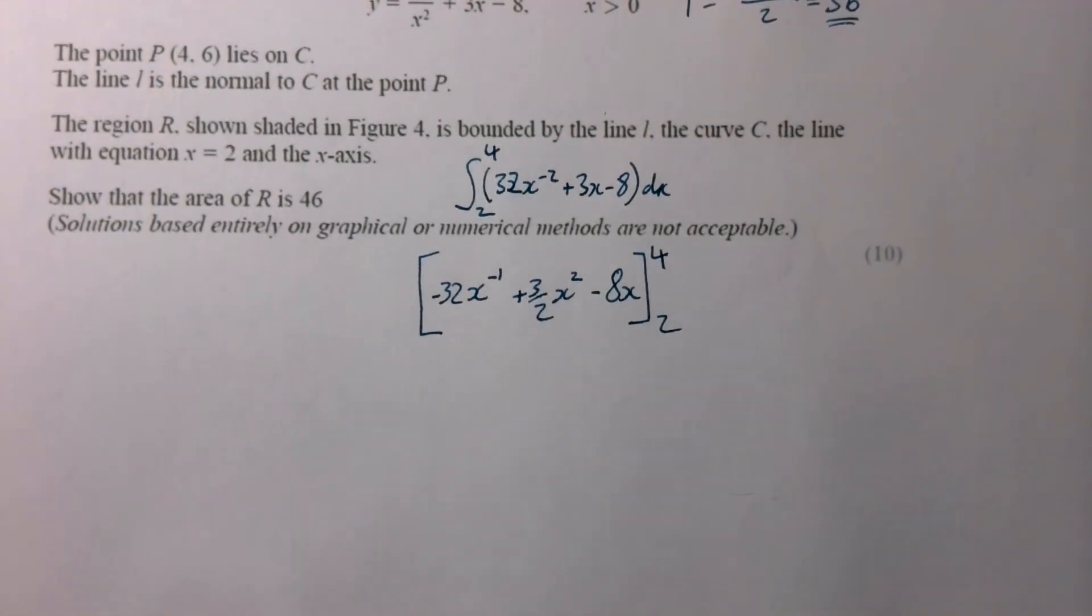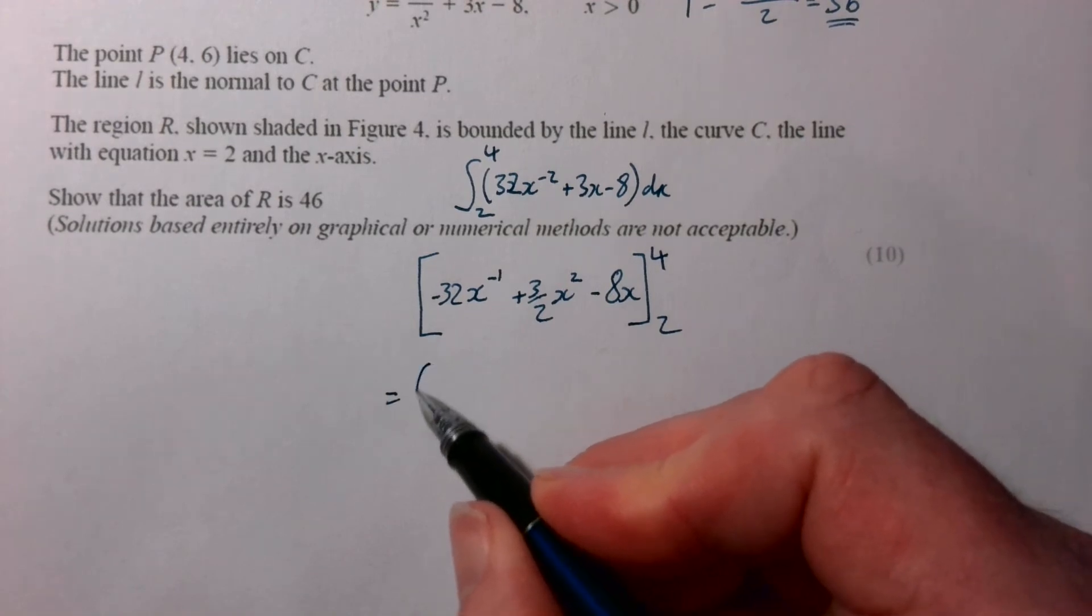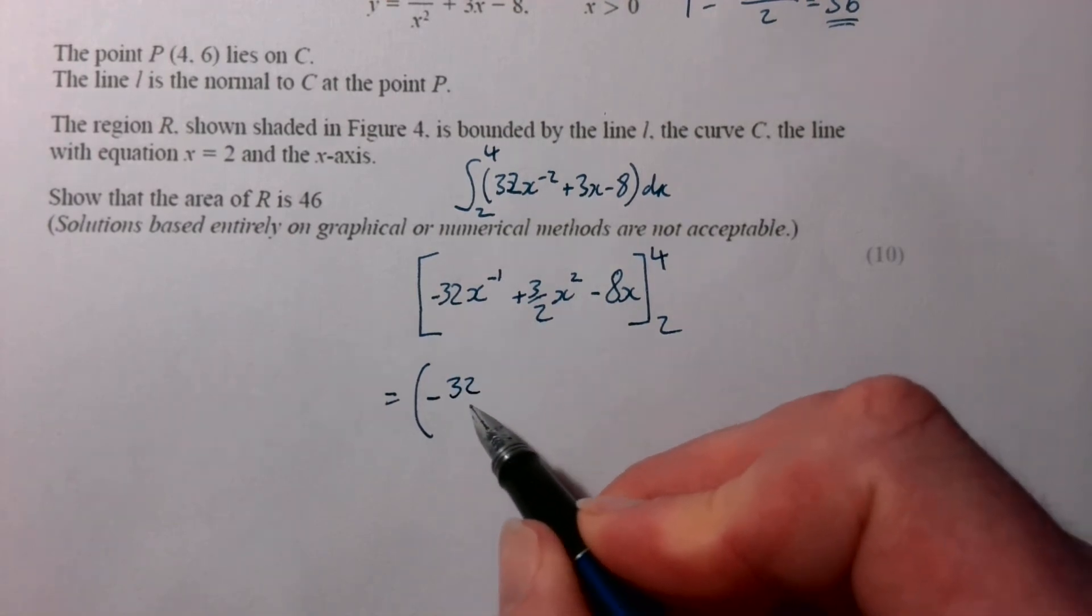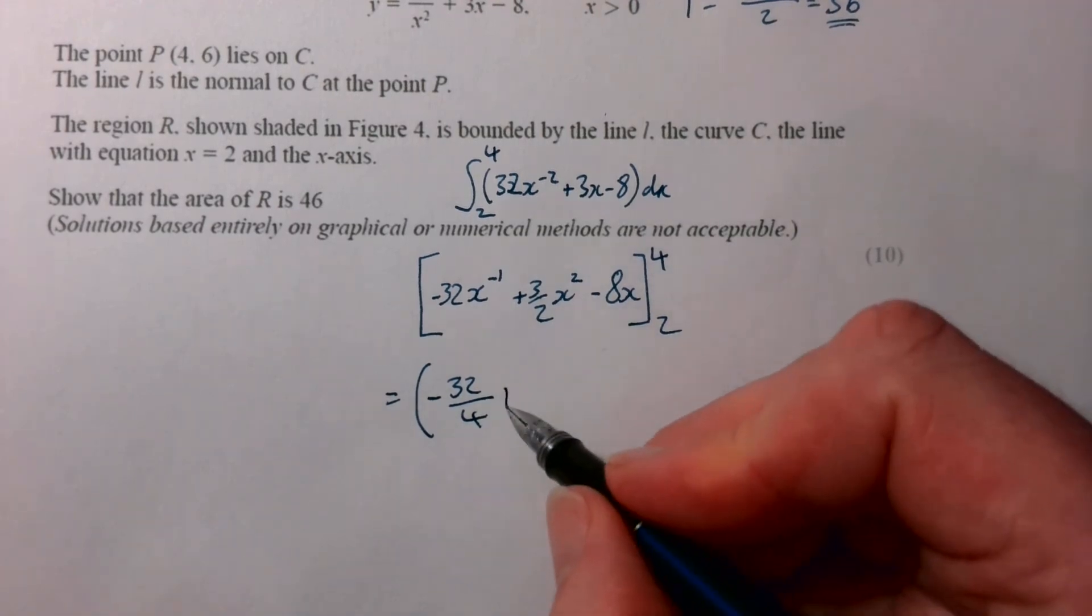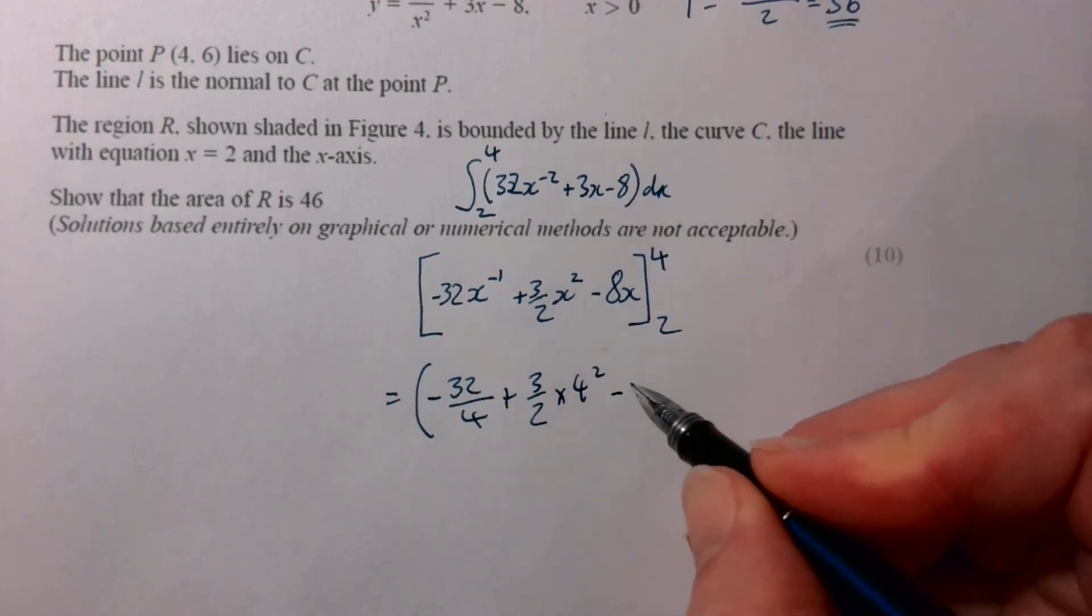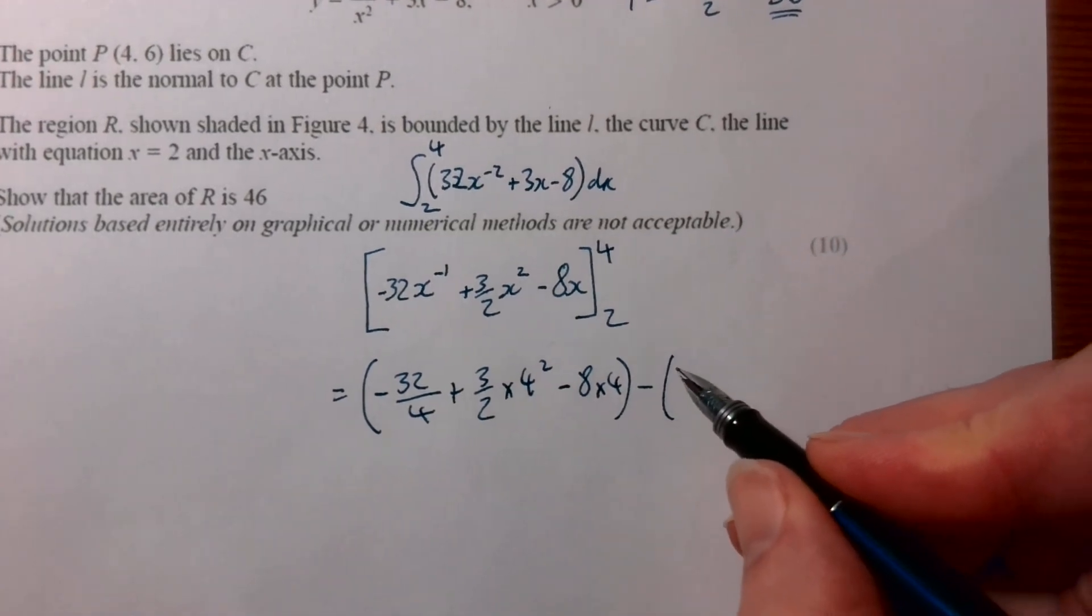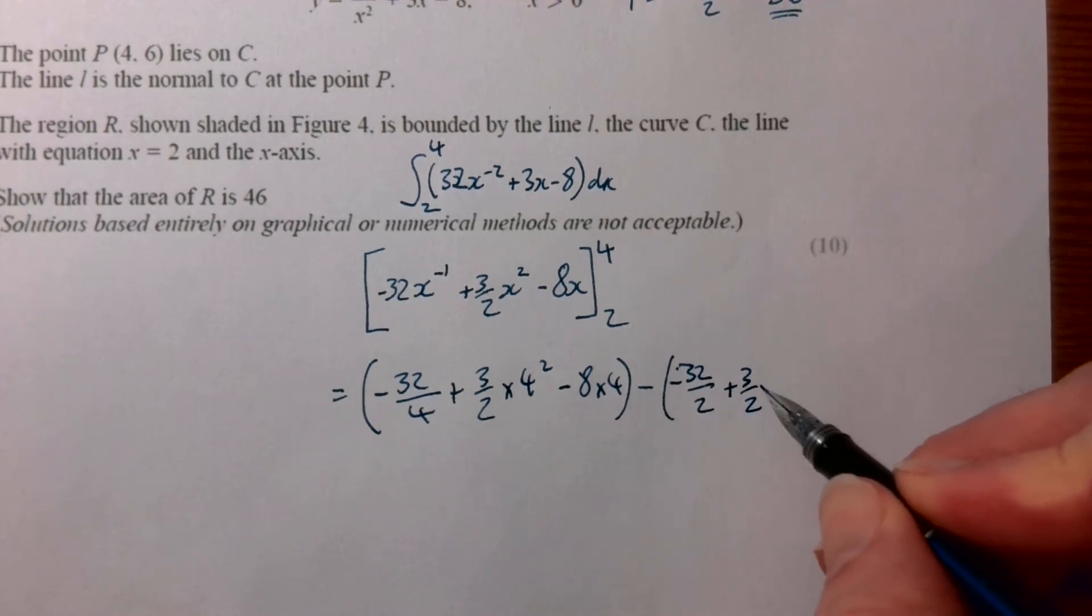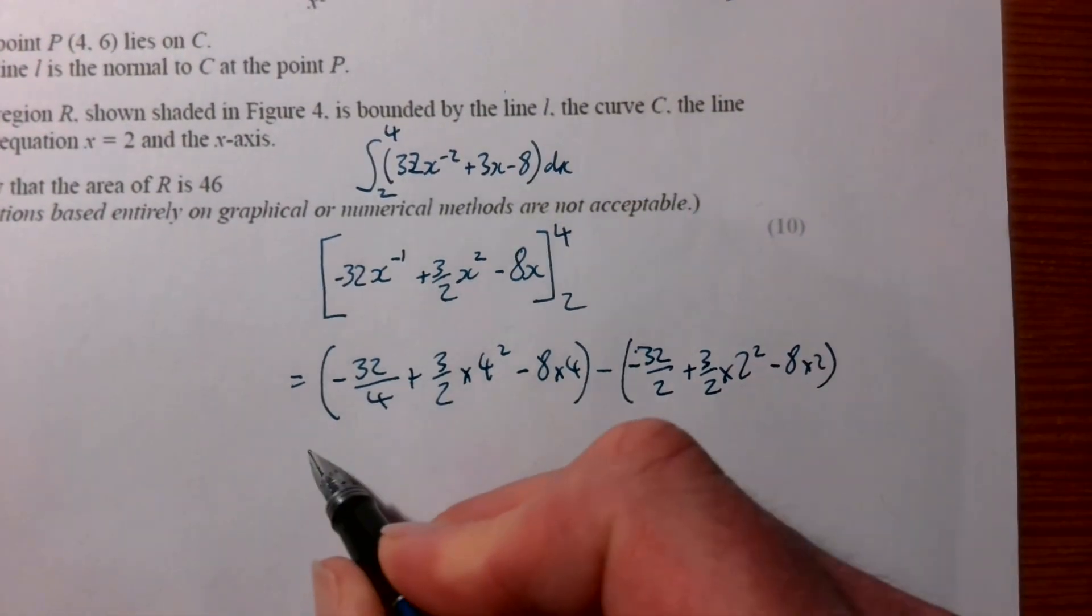So what that means we now need to show is just substituting 4 and 2 into there. So 4 into that will go negative 32 over 4 plus 3 over 2 times 4 squared, take 8 times 4, and taking away from that will be negative 32 over 2 plus 3 over 2 times 2 squared, take 8 times 2. And if you put those bracket bits in there, you do need to show.